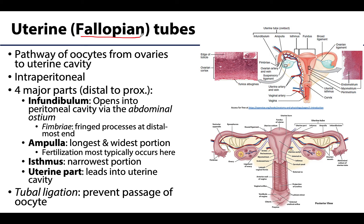The uterine tubes are a bit what they sound like — they are a tube that provides a pathway from the ovary to the uterus for the oocytes. Oocytes are released from the ovaries and then move into the uterine tubes. Note that uterine tubes are actually intraperitoneal, as is most of the internal pelvic viscera in this region. This is something that is very often forgotten — that peritoneum extends this inferiorly.